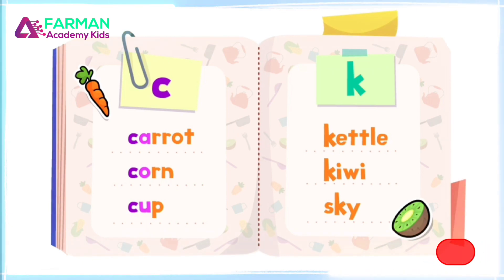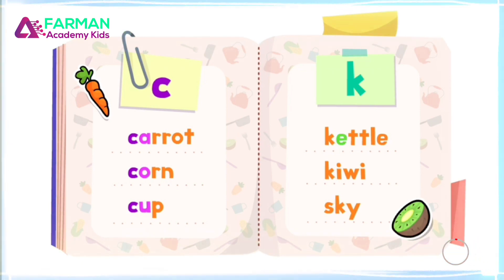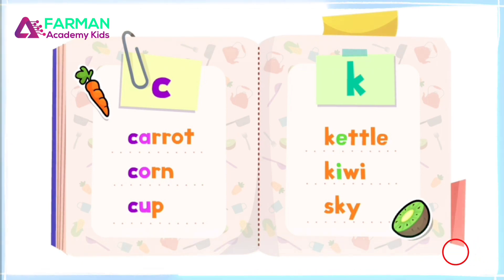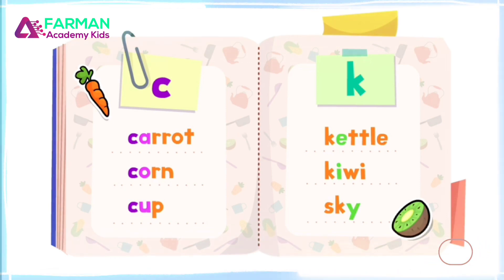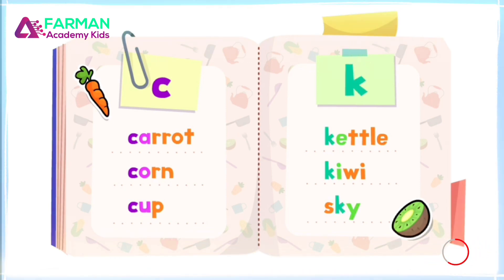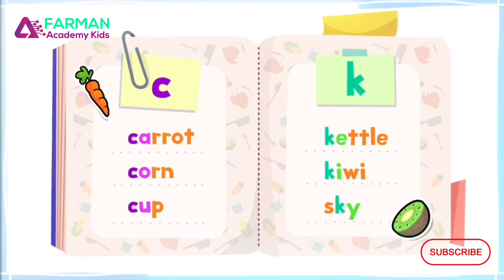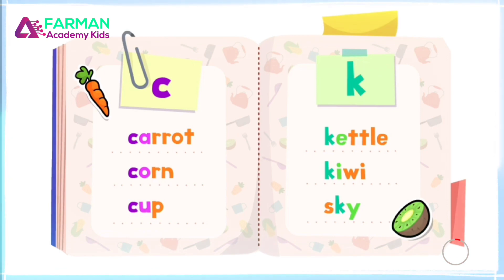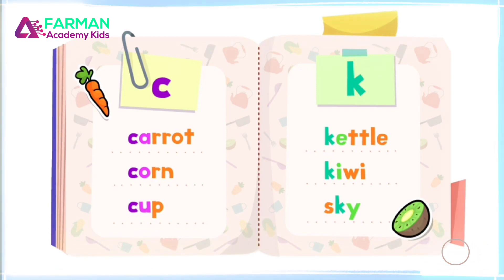If the K sound is followed by an E, I, or Y, use the letter K. Good for you! Hip, hip, hooray! We learned the letters C and K.